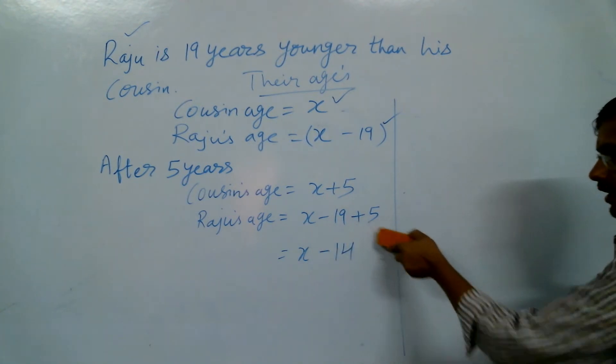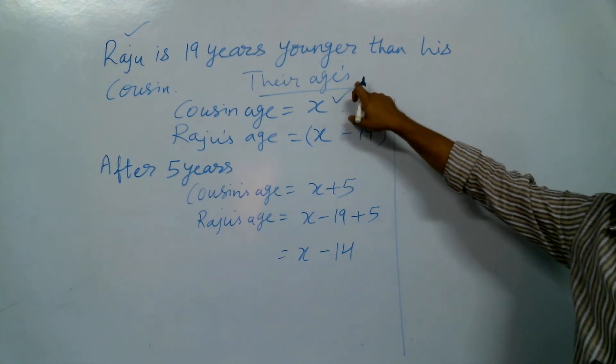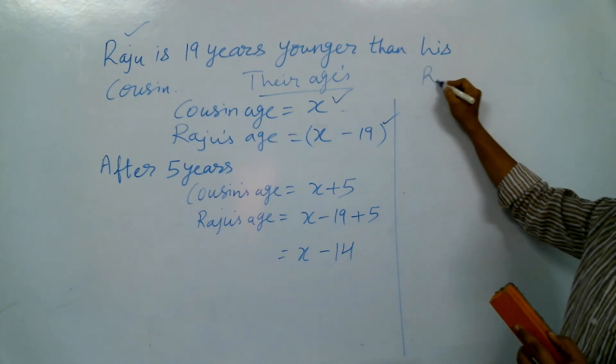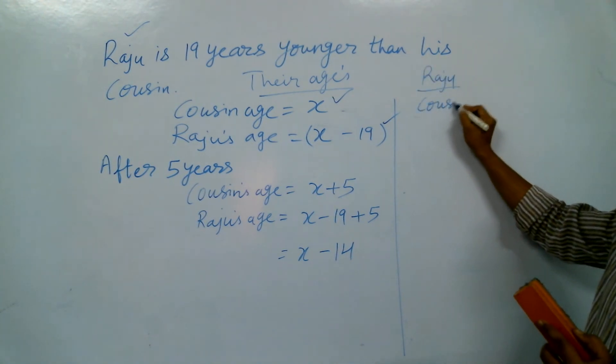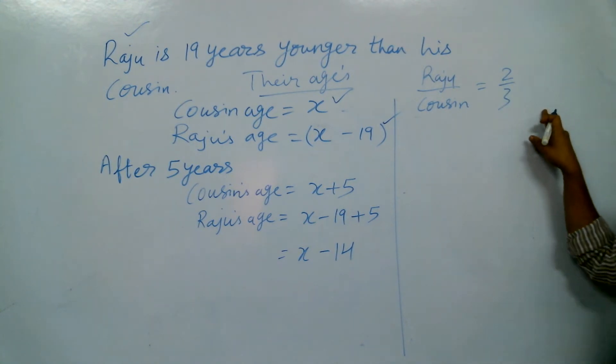Now after 5 years their ages are in a ratio. That means the quotient starting with Raju, so Raju and his cousin's age ratio - Raju to cousin - after 5 years the ratio is 2 by 3.